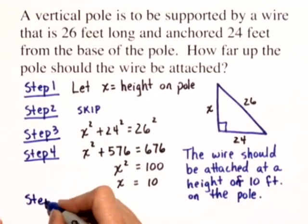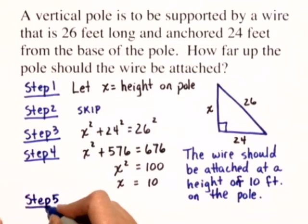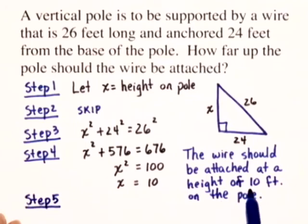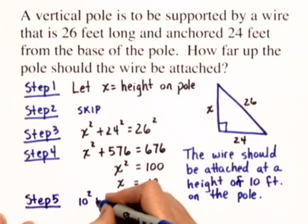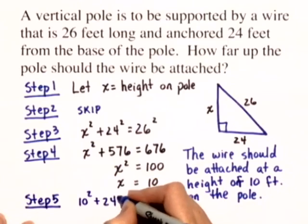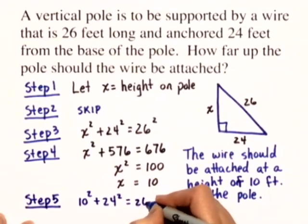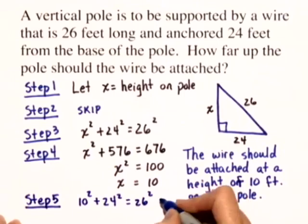And in step five, we can check our answer by substituting 10 in for X. And we can see that 10 squared plus 24 squared is equal to 26 squared. And this checks.